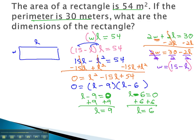We still need to find the width, and this comes from that w = 15 - l equation we solved earlier. If the length is 9, that means the width must be 6. Or if the length was 6, the width would be 15 - 6, which means the width would be 9.